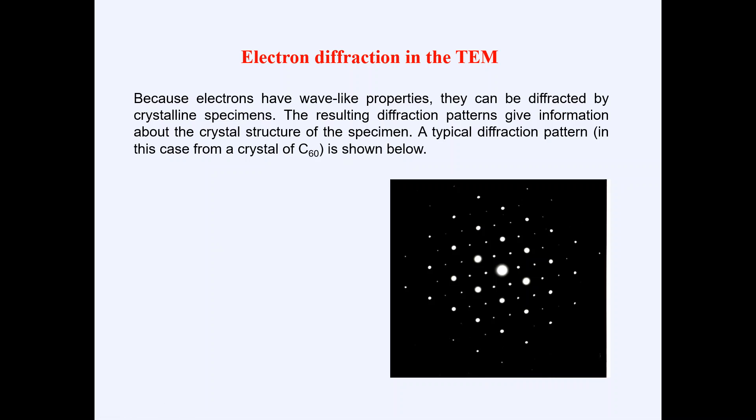So what is meant by diffraction contrast? You know about diffraction and X-ray diffraction technique, which in short we call XRD. We will start the discussions from the main point of concern, that is the electron. In TEM, things revolve around the electron. You know that the electron has wave-like properties, and because of that, electrons can be diffracted by crystalline specimens. The resultant diffraction patterns give information about the crystal structure of the specimens.